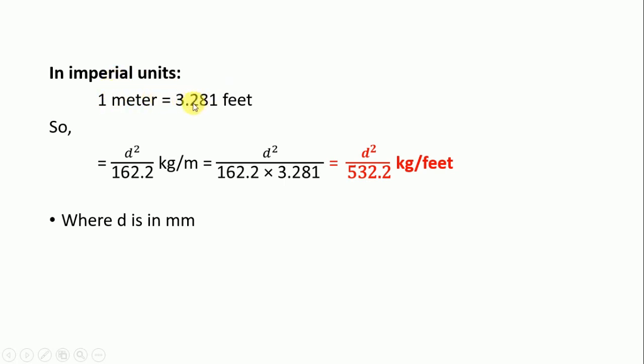So d squared by 162.2 kg per meter equals d squared divided by 162.2 times 3.281, which equals d squared by 532.2 kg per feet, where d is in mm.